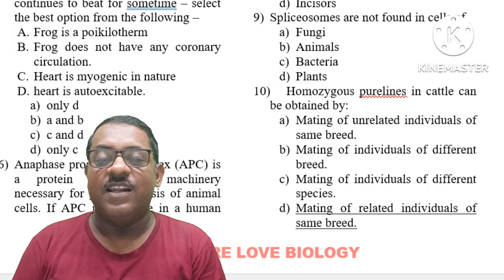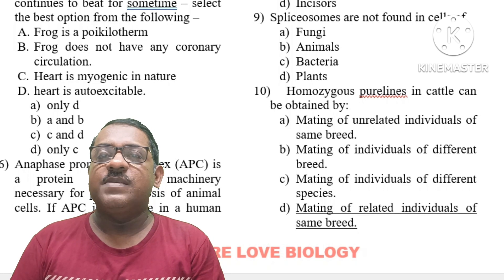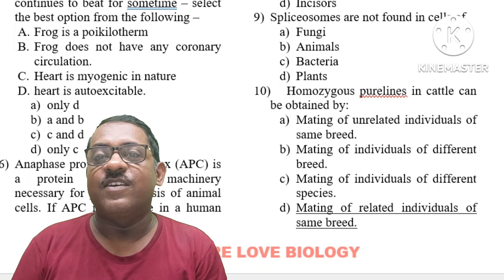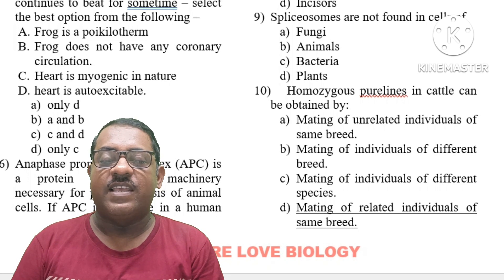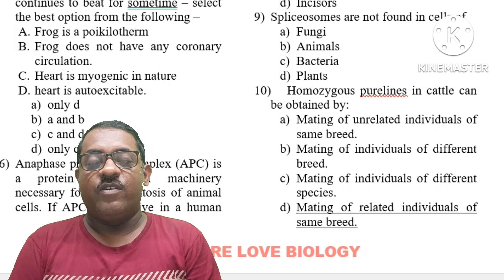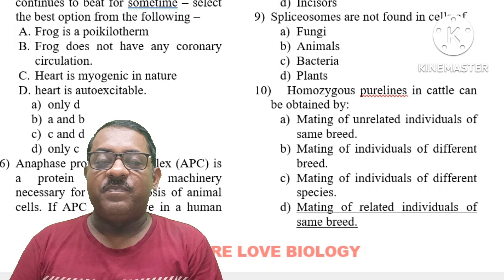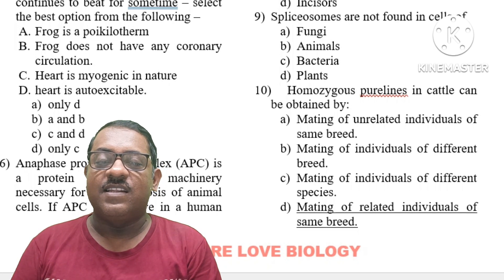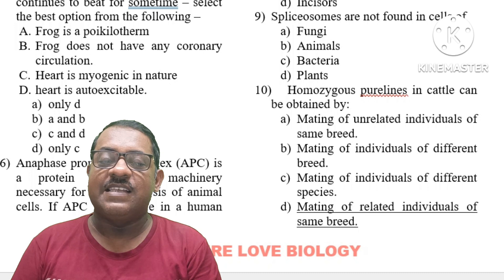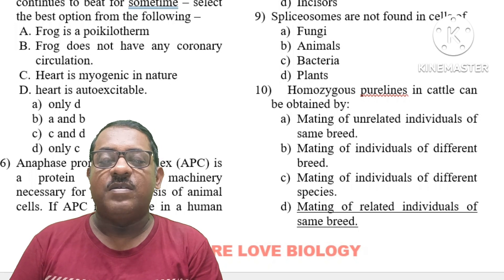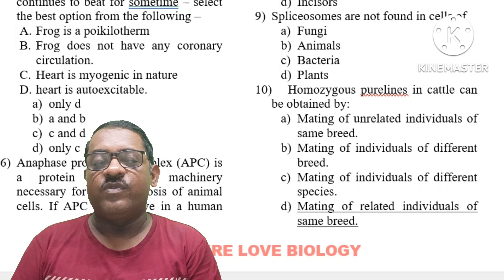Question number 9: Spliceosomes are not found in which type of cell? RNA splicing occurs as DNA is transcribed into RNA. Spliceosomes carry out RNA splicing and are not found in prokaryotic cells. The right answer is option C.